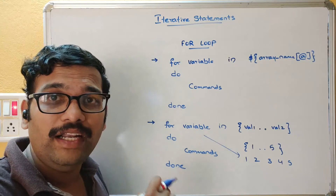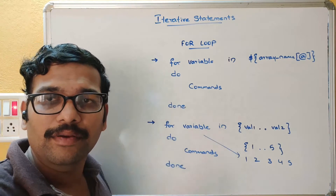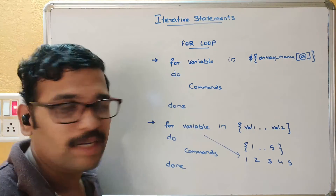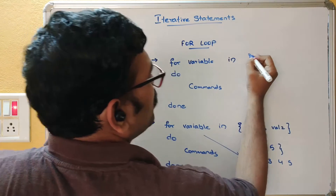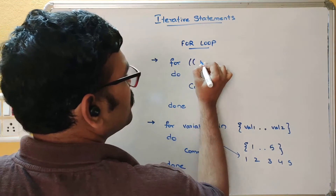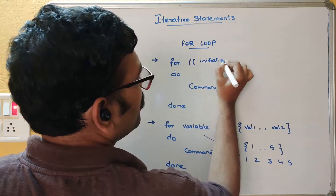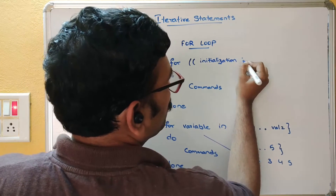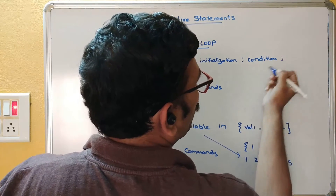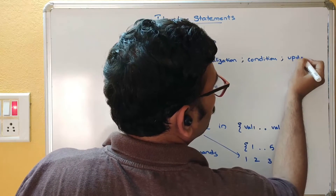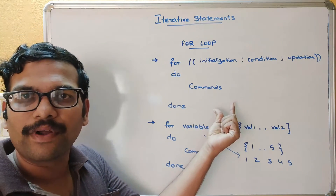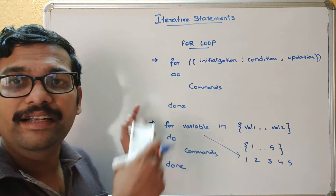We can also write the for loop syntax in C language style. Use double parentheses: 'for ((initialization; condition; updation))' — the same syntax used in C language works in shell scripting as well. So the for loop can be implemented in these many ways.